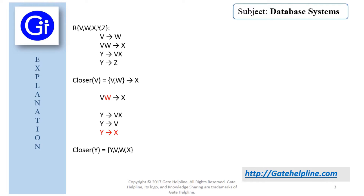We are given schema R with the functional dependencies V → W, VW → X, Y → VX, and Y → Z. From the first dependency, the closure of V gives us {V, W}, and using the second dependency VW → X, we can get X from V alone. So in the second dependency, W is an extraneous attribute, since V can determine W and through that VW can determine X.